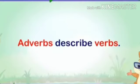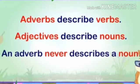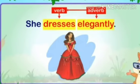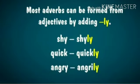Adverbs describe verbs only. Don't get confused — adverbs describe verbs, and adjectives describe nouns. An adjective never describes a verb, and an adverb never describes a noun. See this: 'The dress is elegant.' Here, 'dress' is a noun, and 'elegant' describes the noun itself, so it is an adjective. But in 'She dresses elegantly,' 'elegantly' is an adverb because it describes the verb 'dresses.' That is the difference between adjective and adverb.